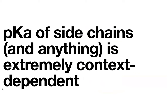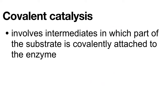The pKa of amino acid side chains is extremely context-dependent. In acid-base catalysis, we're just giving and taking protons — we're not making new covalent bonds to anything other than a proton. We're not linking two molecules together; we're just adding or removing a proton.